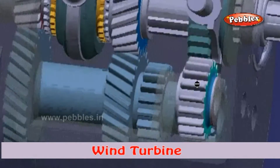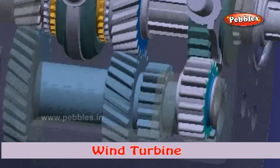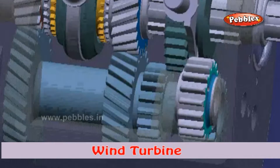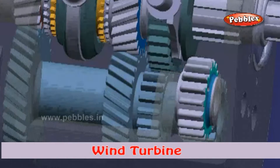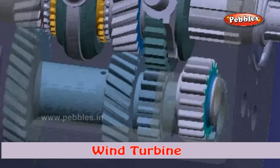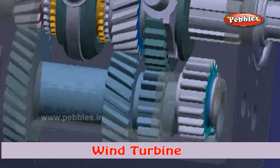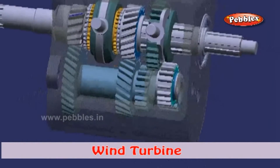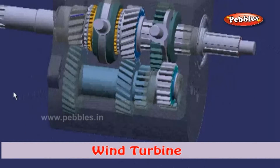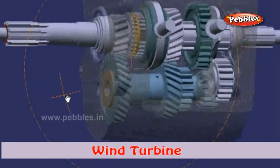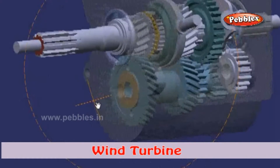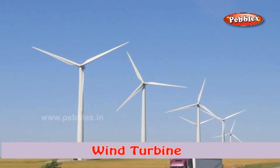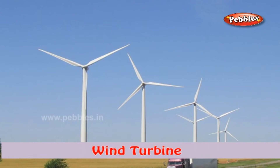The turbine speed can even reach about 250 kilometers per hour. However, at very high speeds, the rotation of the blade is seized with the help of brakes, otherwise there are chances that strong winds may rip off the turbine blades.